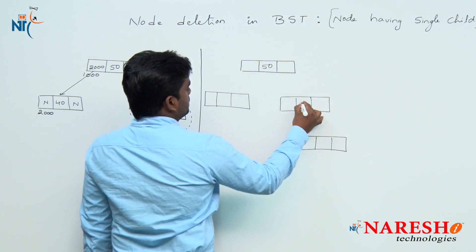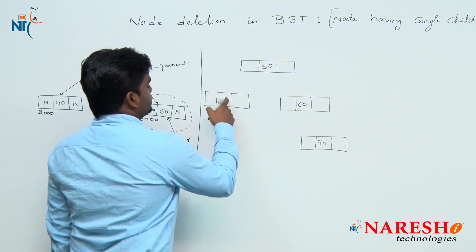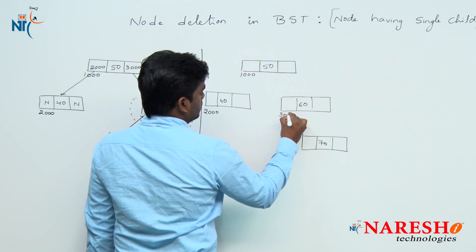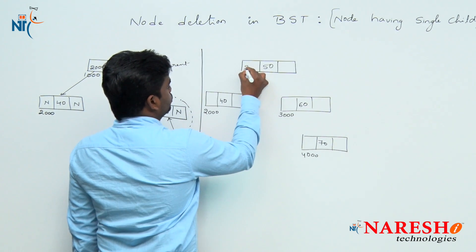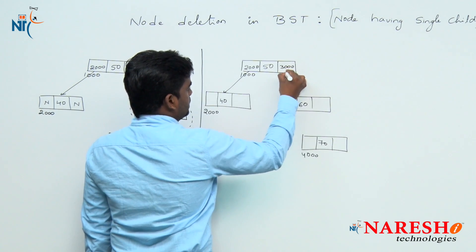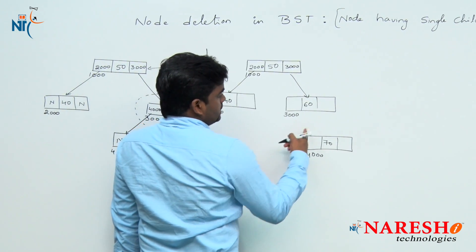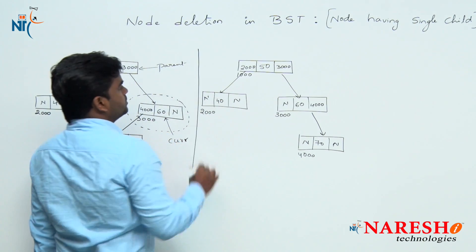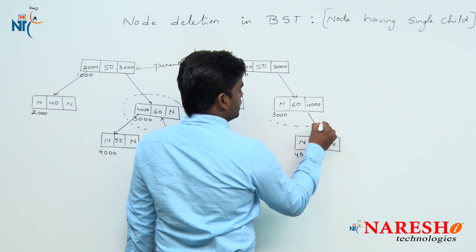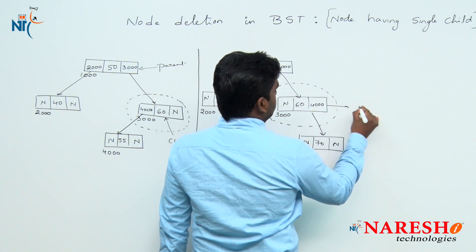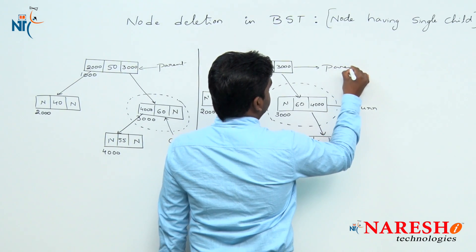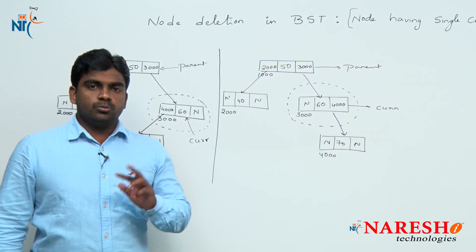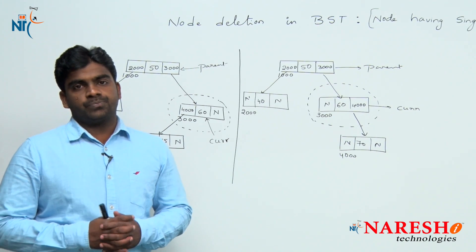Suppose 50, 60, 70, and next one is 40. Same story: 1000, 2000, 3000, 4000. 2000 connected here, 3000 here, and 4000 we are connecting to right - remaining nodes are null pointers. Now target is the same: this is a target, this is current node and this is parent node. Actually two more options are there, total we have 4 chances.